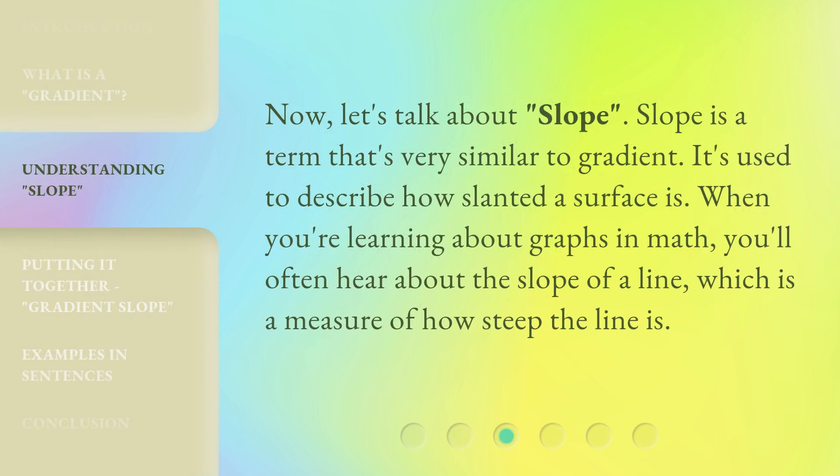Now, let's talk about slope. Slope is a term that's very similar to gradient. It's used to describe how slanted a surface is. When you're learning about graphs in math, you'll often hear about the slope of a line, which is a measure of how steep the line is.